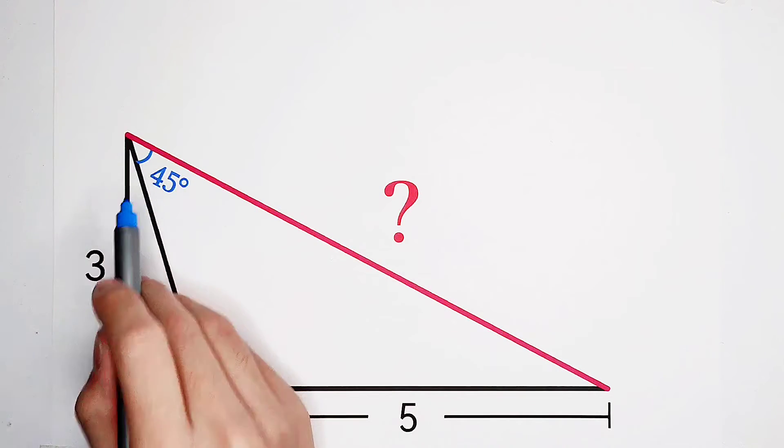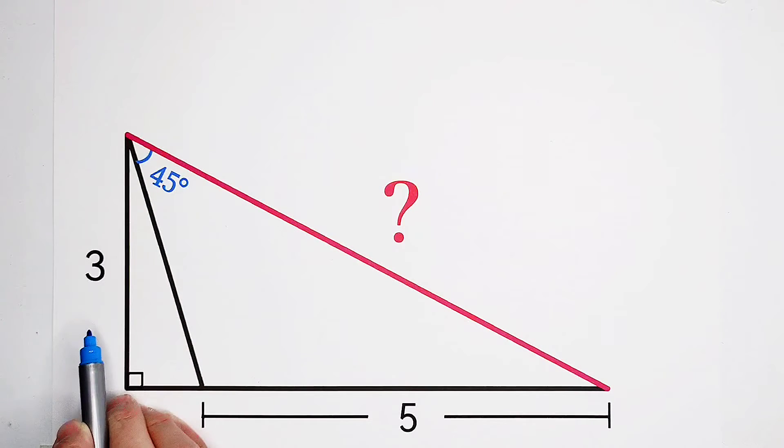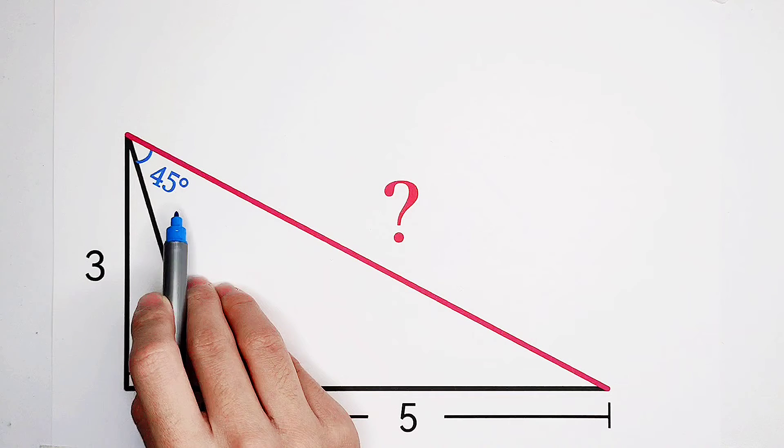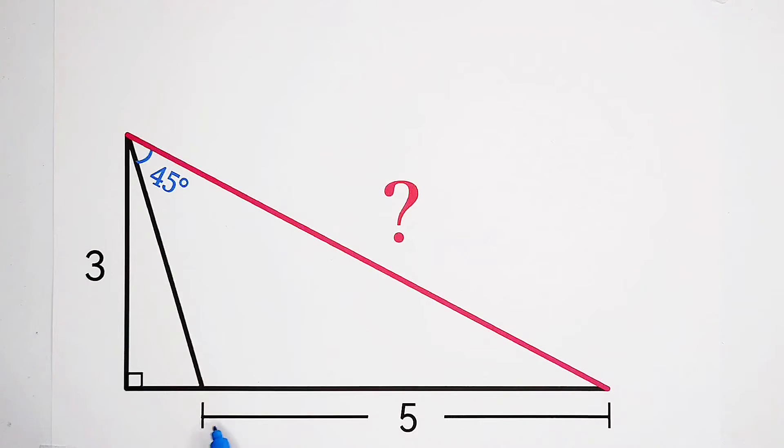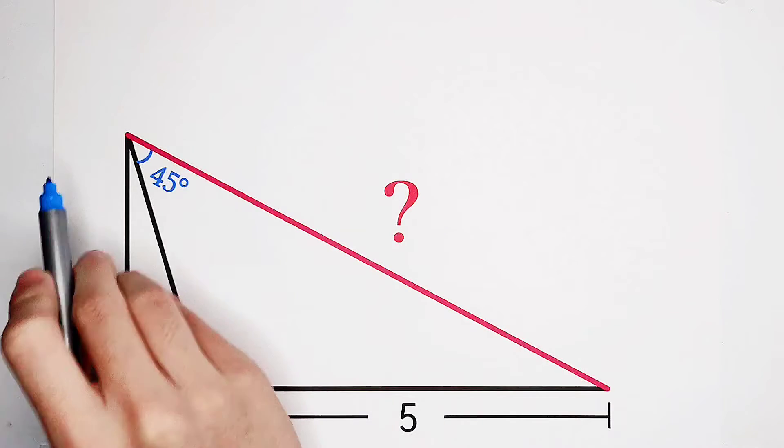Here is the right triangle. This right angle side is 3. This angle is 45 degrees, and this piece measures 5. How long is the hypotenuse?